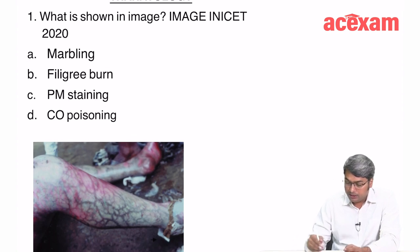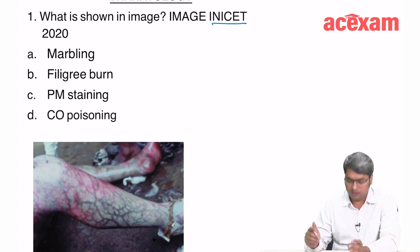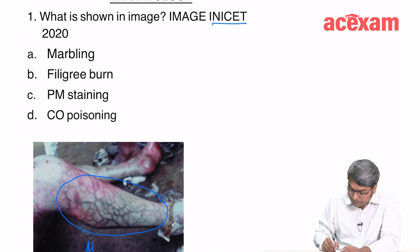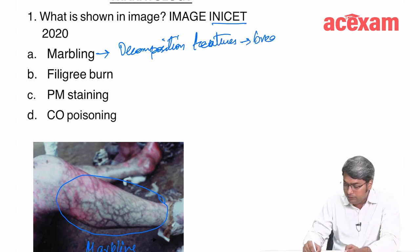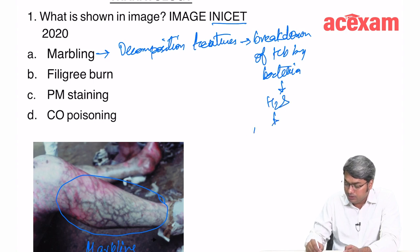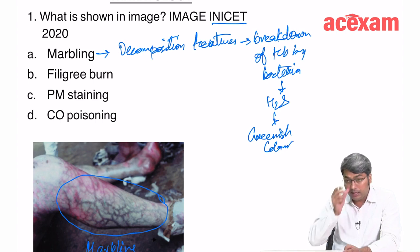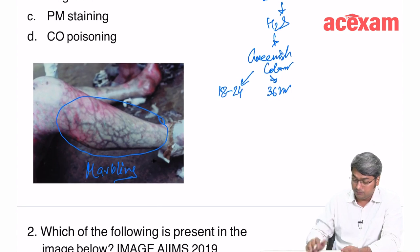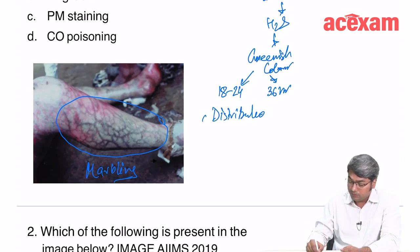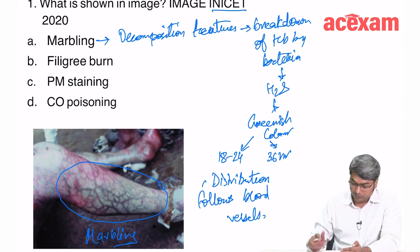What is shown in this image? This came in INICET 2020 and is a favorite of examiners. This is a typical image of marbling — a decomposition feature occurring due to breakdown of hemoglobin by bacteria, producing H₂S, which leads to a greenish color. In summers it appears by 18–24 hours; in winters by 36 hours. The distribution follows the vasculature — it follows the blood vessels.